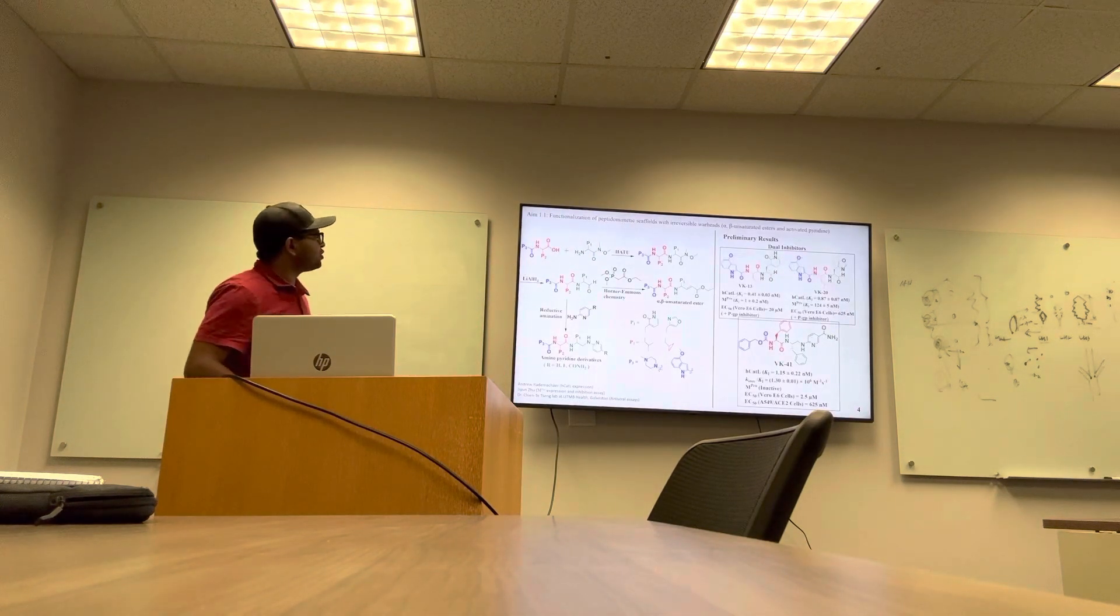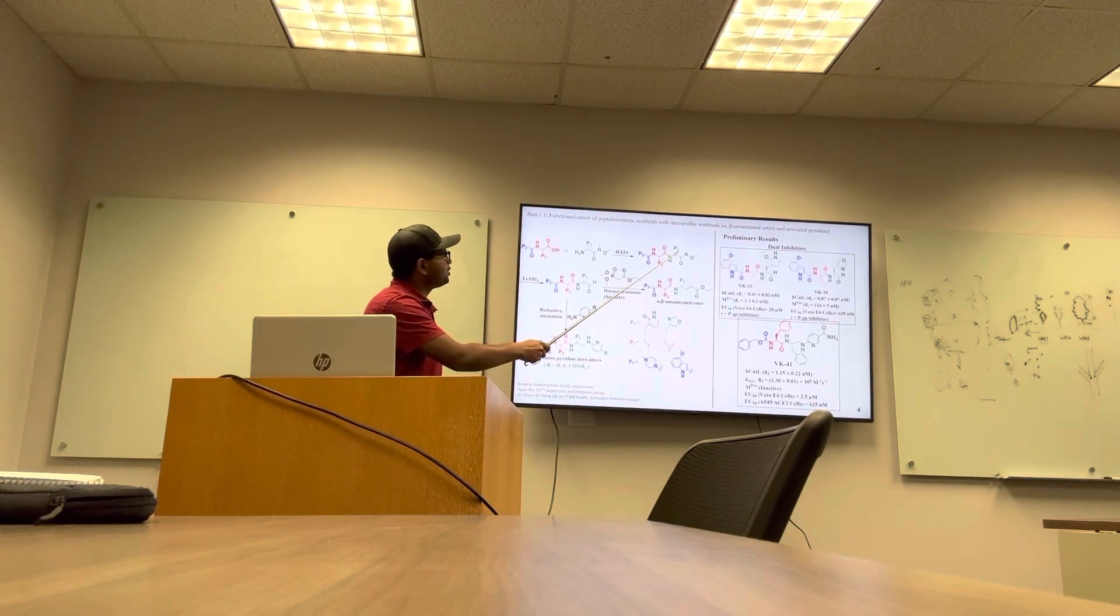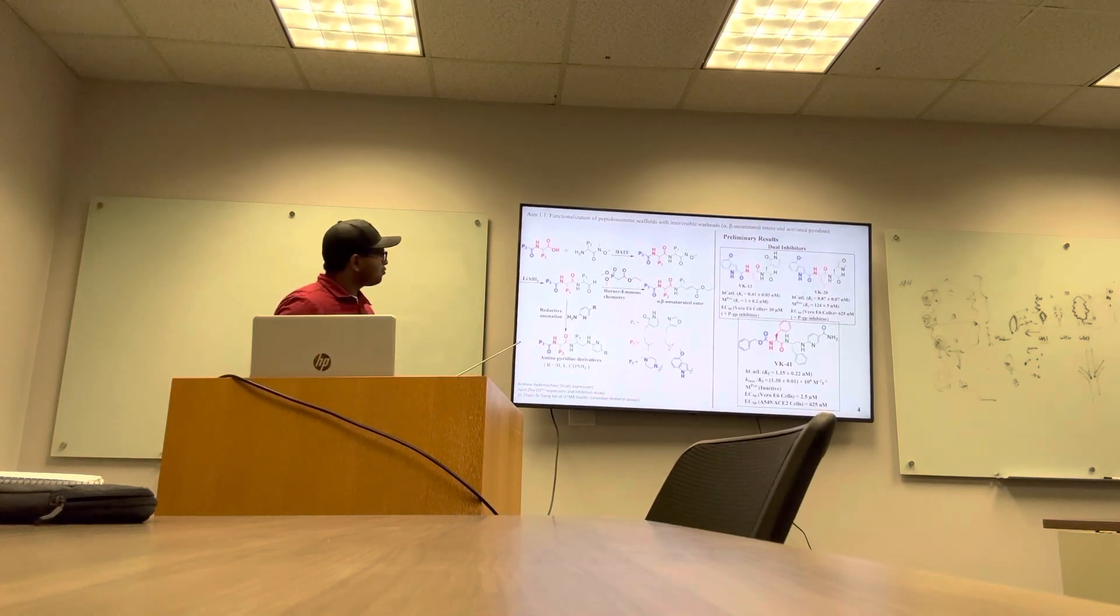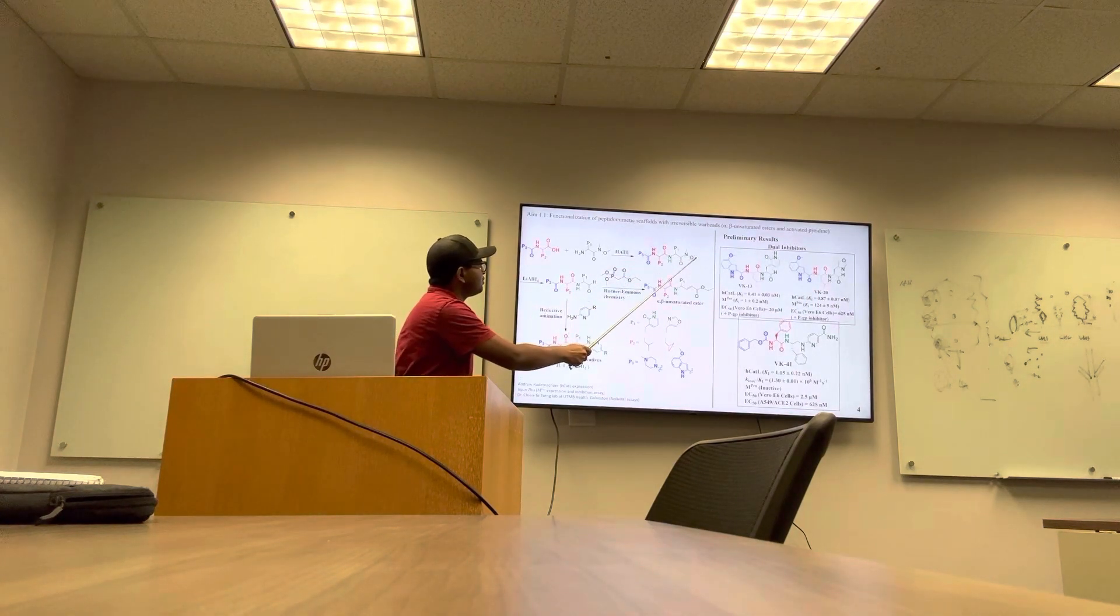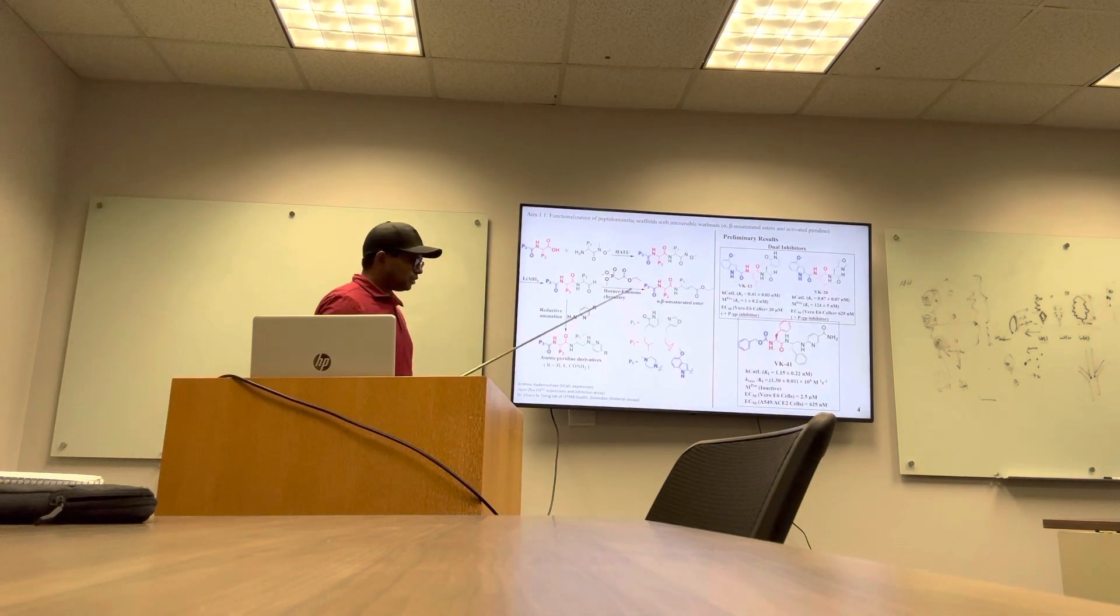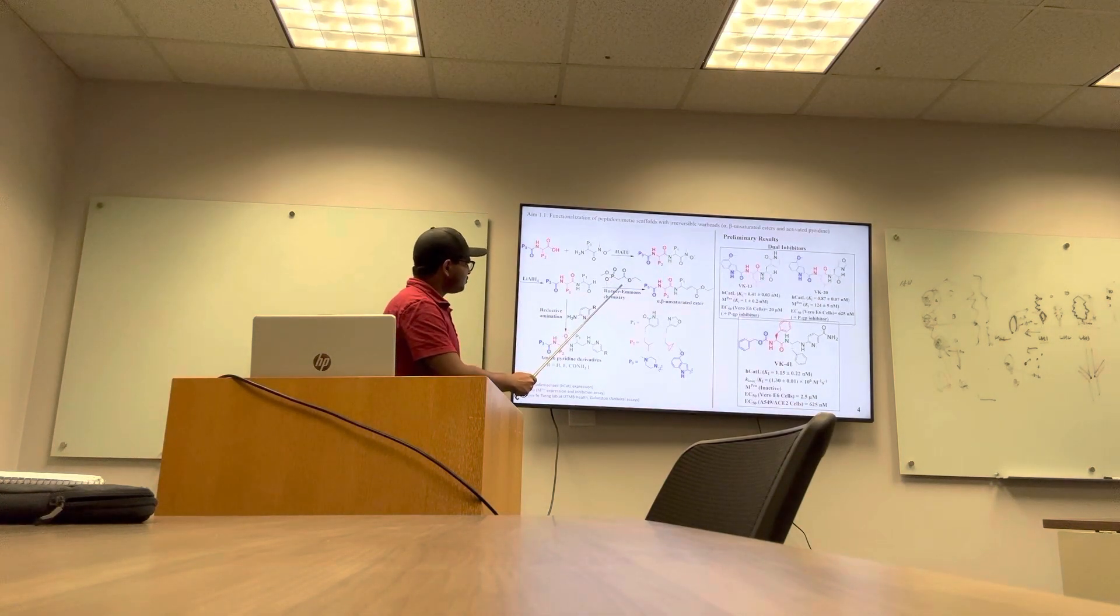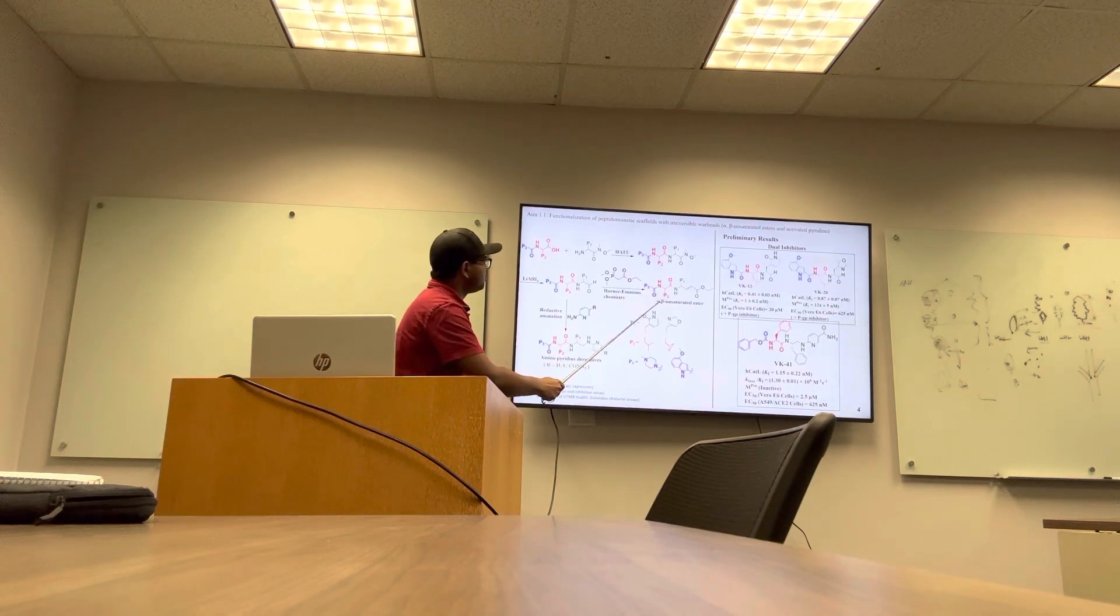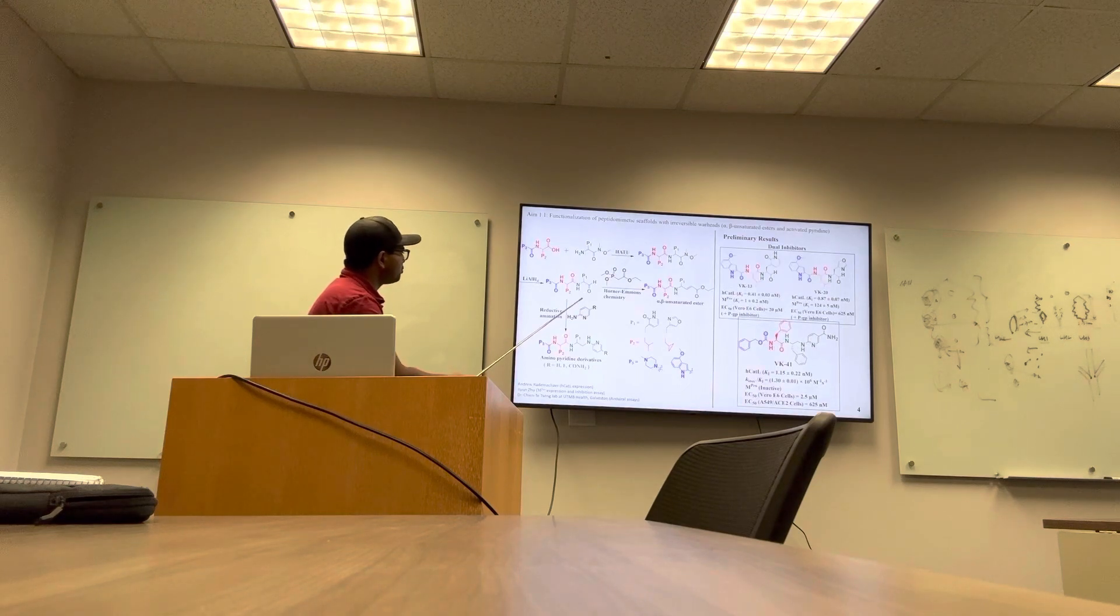Coming to Aim 1, the first part is to functionalize our peptidomimetics with irreversible warheads which includes alpha-beta unsaturated esters and activated pyridines. Both warheads require a common synthetic route that involves synthesis of aldehydes. Aldehydes can be synthesized from peptides containing Weinreb amide at the C-terminal. These peptides will be synthesized using carboxylic acid-amine coupling chemistry using HATU as coupling reagent. Aldehydes, when treated with appropriate phosphonate esters using Horner-Wadsworth-Emmons chemistry, will be converted into unsaturated esters. Similarly, aldehydes will be converted into secondary amine products using reductive amination with appropriate aminopyridines.